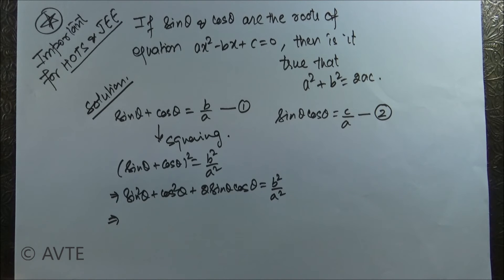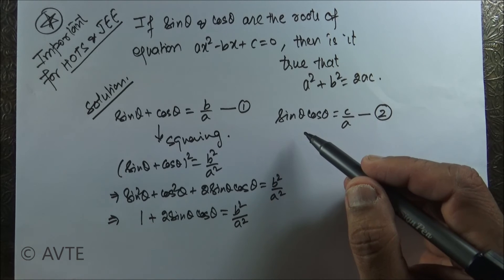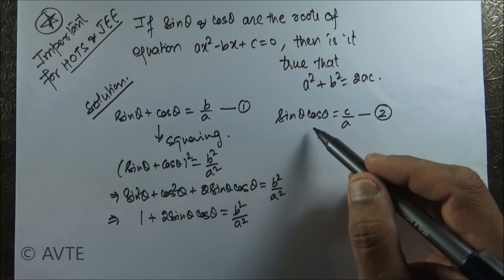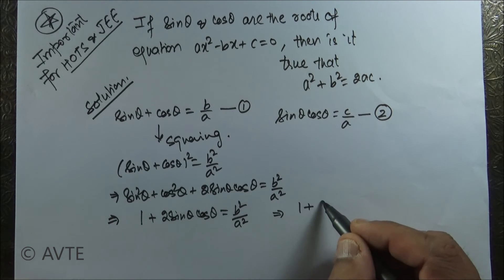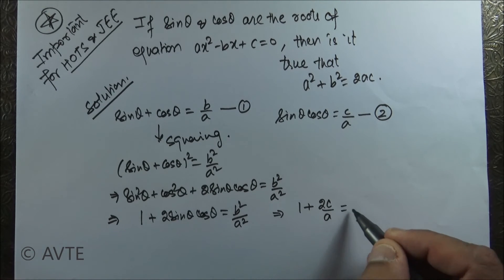What is sine squared theta plus cos squared theta? That is one. Now from second equation we can put the value of sine theta cos theta in this equation to get one plus 2c over a, which is equal to b squared over a squared.